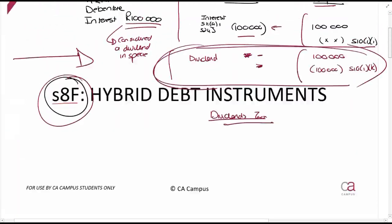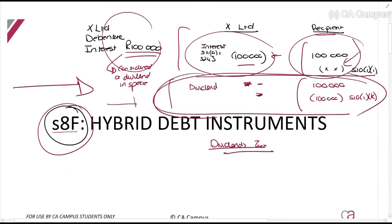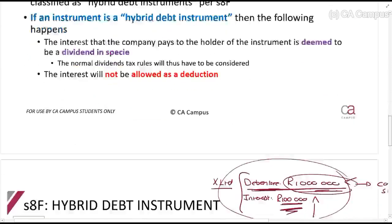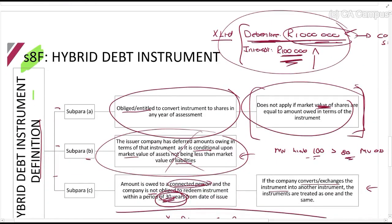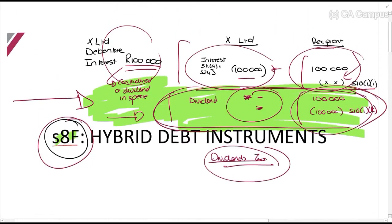In a nutshell: normally you claim an interest deduction and the person receiving it is taxed on it, potentially qualifying for the Section 10(1)(i) interest exemption. But if it's treated as a dividend, there's no deduction, it's 100% exempt, and there's dividends tax. So if Section 8F applies, you must treat it the same as if a dividend was paid — in all of the situations we just discussed.